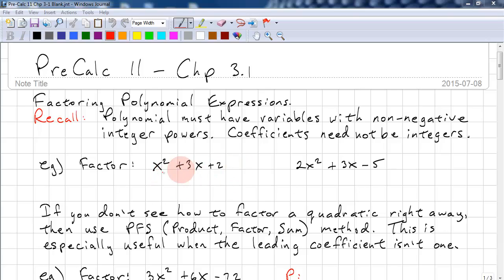Let's factor these. Factor x² + 3x + 2. Since this is positive and this is positive, it must be positive here. Factors of 2 are 2 and 1, and they add up to 3. Here we have 2x² + 3x - 5. This is negative 5, so one must be positive, one must be negative. We have 5 and 1. 5x minus 2x is 3x, and that's how we factor that one.